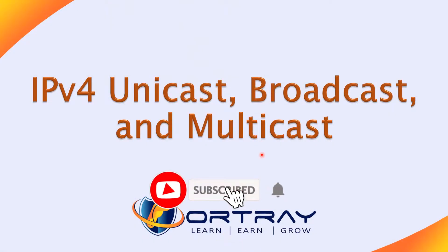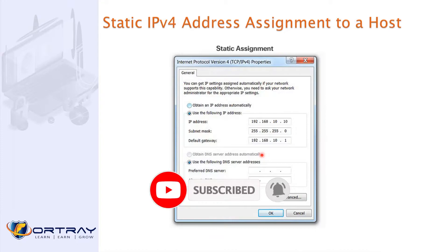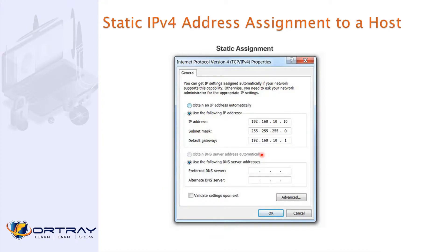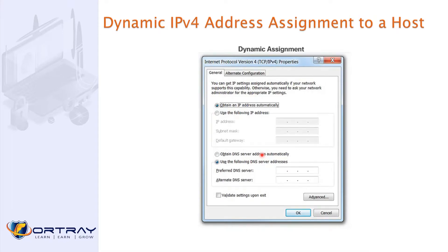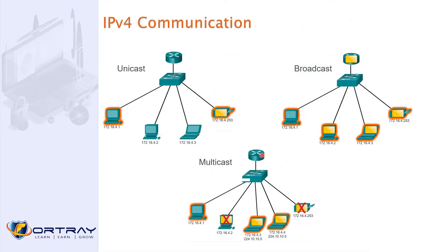IPv4 unicast, broadcast, and multicast. We know that we can assign static IP addresses, or we can assign dynamic IP addresses as well. There are three types of communication we already discussed: unicast, broadcast, and multicast. Unicast means one-to-one — when this host wants to talk to this host, it's called unicast. Broadcast means the traffic goes to all the nodes in your network. Multicast means it's a group of people.